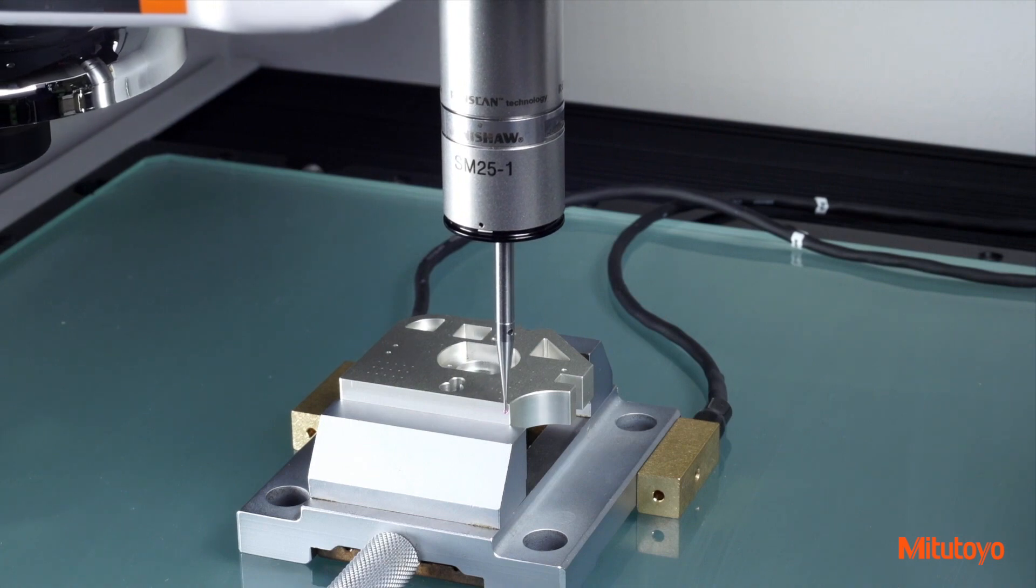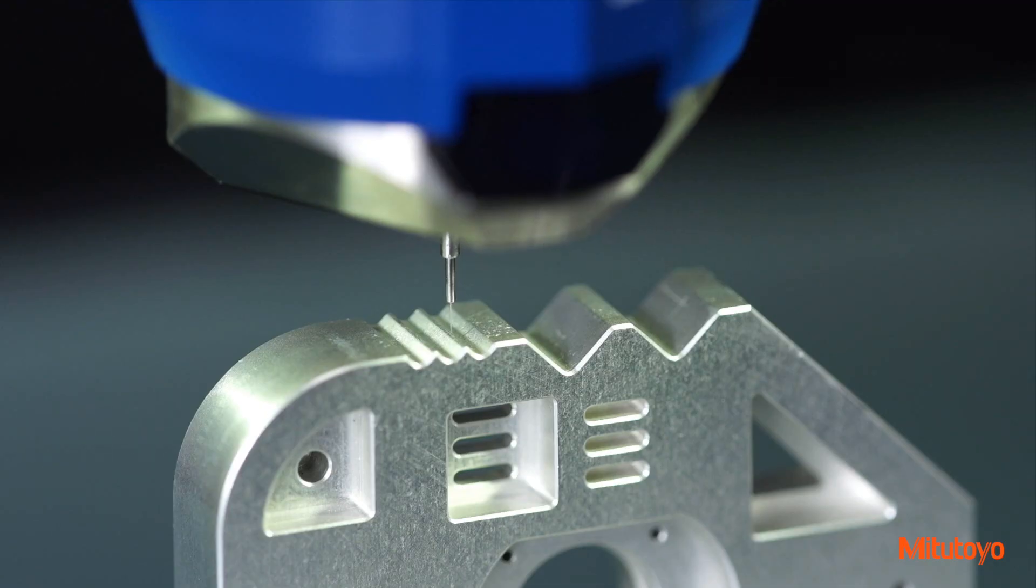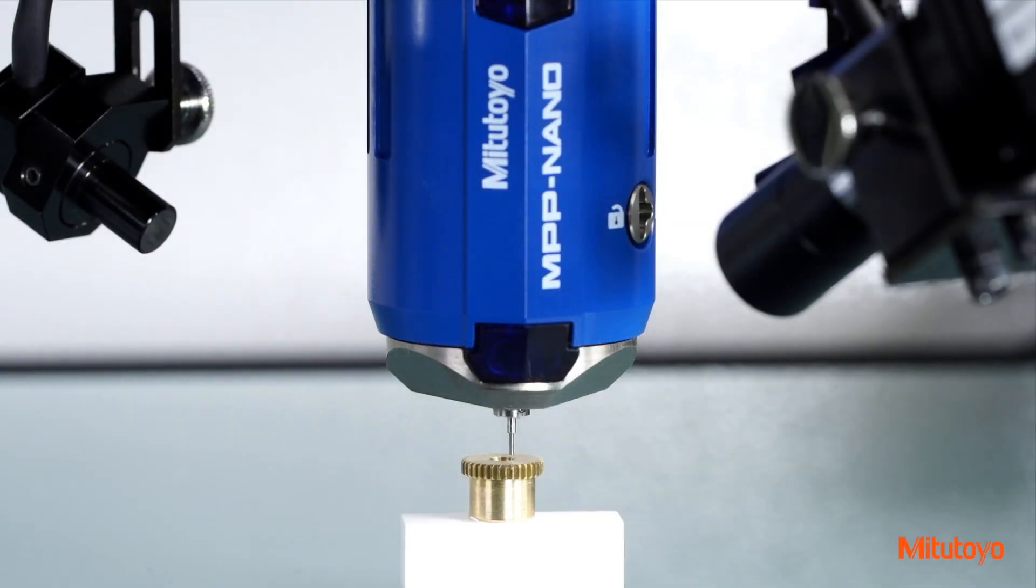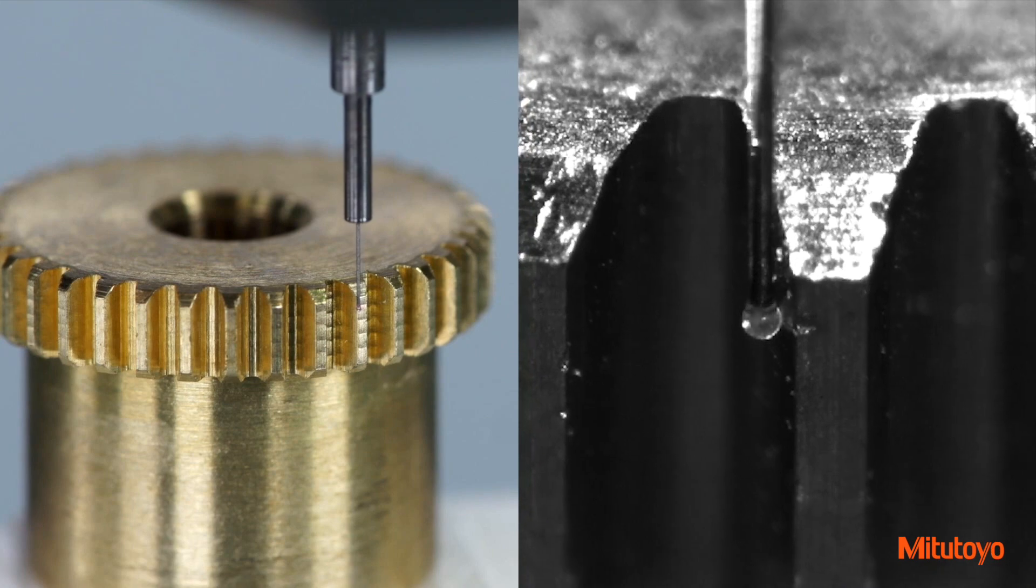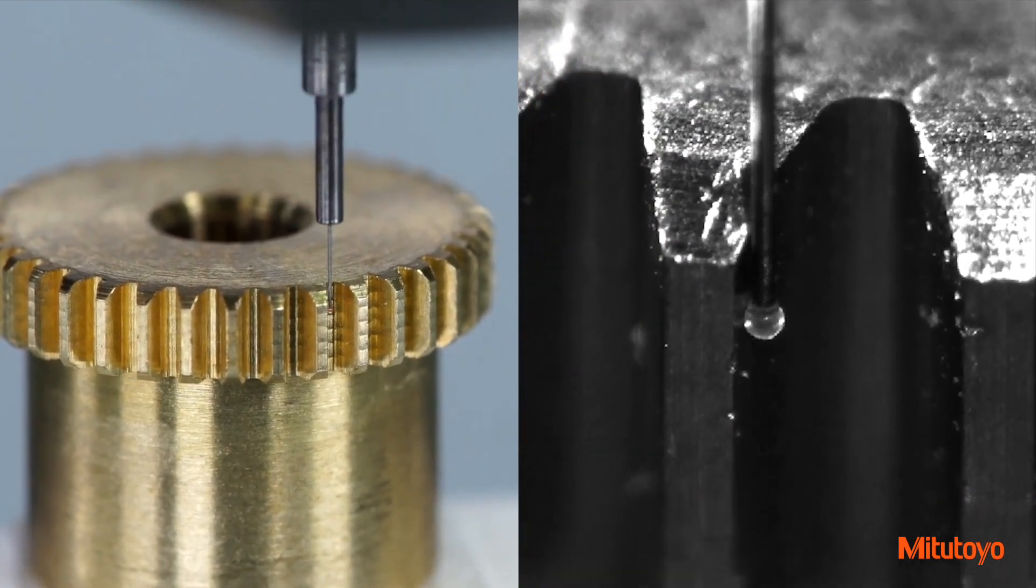MyScan utilizes the Quick Vision Image Head and newly developed MPP Nanoprobe for highly accurate autonomous scanning. This combination enables precise positioning and allows target measurements, even in locations where visual checking is difficult.